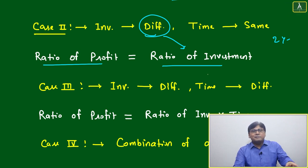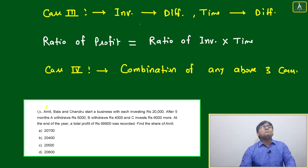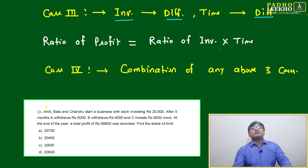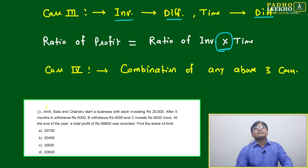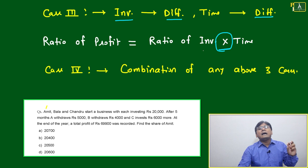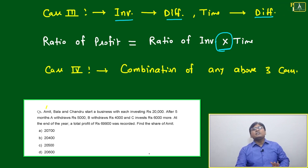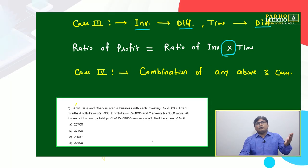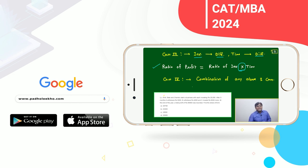Case three: if both investment amount and time period are different, then we use multiplication. The ratio of profit equals the ratio of investment multiplied by time. For example, one person invested 10 lakh for 2 years, another invested 15 lakh for 3 years, and another invested 20 lakh for 4 years. Then calculate 10×2, 15×3, and 20×4, and take that ratio — that ratio is the profit ratio.